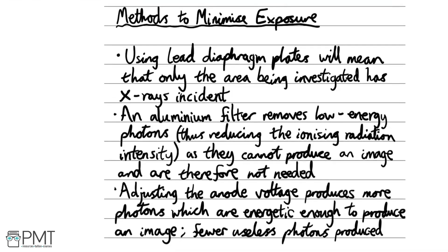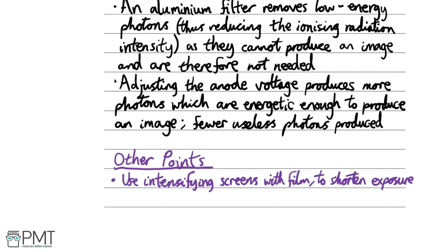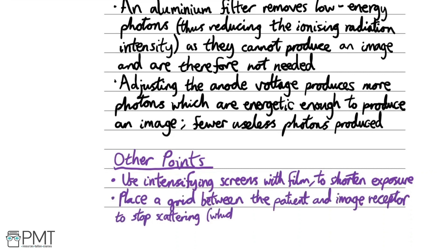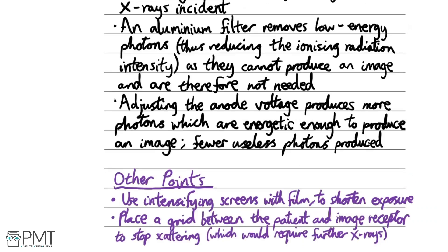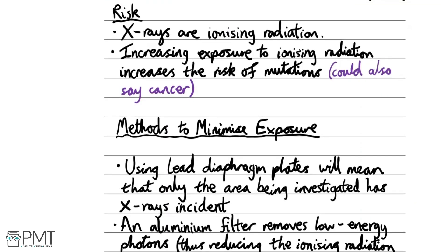Additional methods you could include but don't need for full marks: use intensifying screens with the film to shorten exposure time, effectively using a lower intensity of x-rays and reducing risk to the patient. You can also place a grid between the patient and the image receptor to prevent x-ray scattering, which would otherwise require further x-rays. To get all six marks, explain the risk fully and give enough detail on three methods — a lack of detail on any method loses marks.